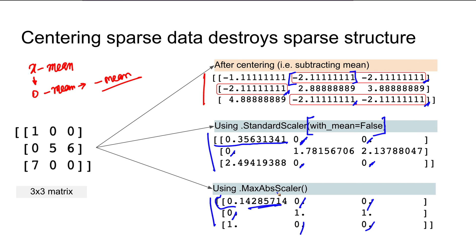I hope you got an intuition about what sparse data and sparse matrices are, and how they compare with dense matrices. We can also compute the sparsity of a dataset — that is, the percentage of positions in the matrix that are zeros or empty. Let's get into Jupyter Notebook now and look at how some of this can be implemented in Python.